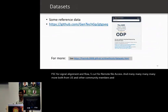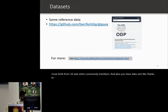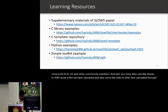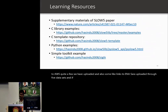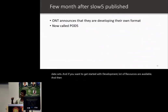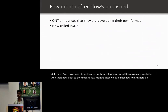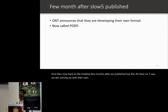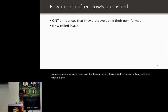We also have datasets — thanks to AWS, quite a few have been uploaded, and there are links to ENA and SRA-uploaded SLOW5 datasets. Now back to the timeline: a few months after we published SLOW5, ONT announced they were coming up with their own file format, which turned out to be Pod5 — now the default file format in ONT sequencers.